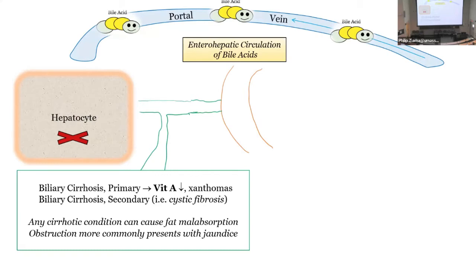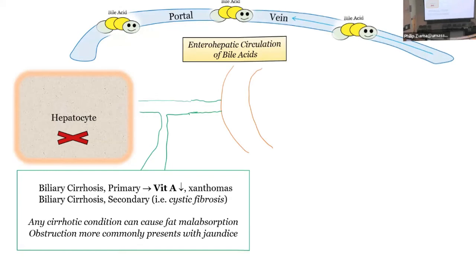Primary biliary cirrhosis versus secondary biliary cirrhosis — secondary is cystic fibrosis, where the liver becomes damaged because the biliary ducts get damaged by inspissated secretions. As for cirrhosis in general or obstruction — a mass at the head of the pancreas should cause steatorrhea. And cirrhosis patients may have diarrhea from lactulose used to treat encephalopathy, but technically if they're not making bile salts, they'd have diarrhea from that as well.